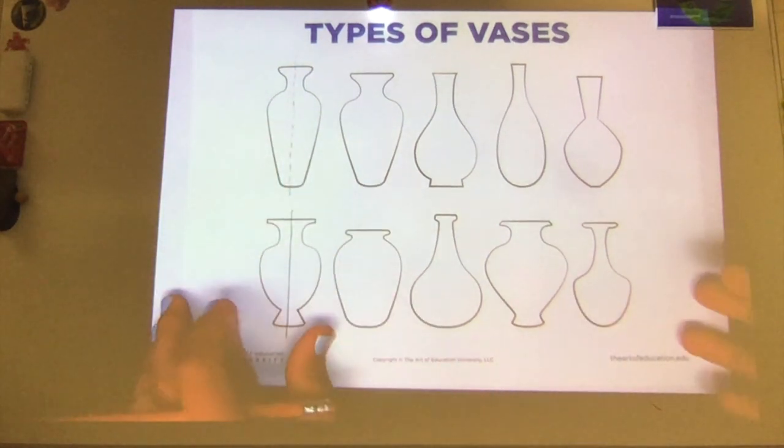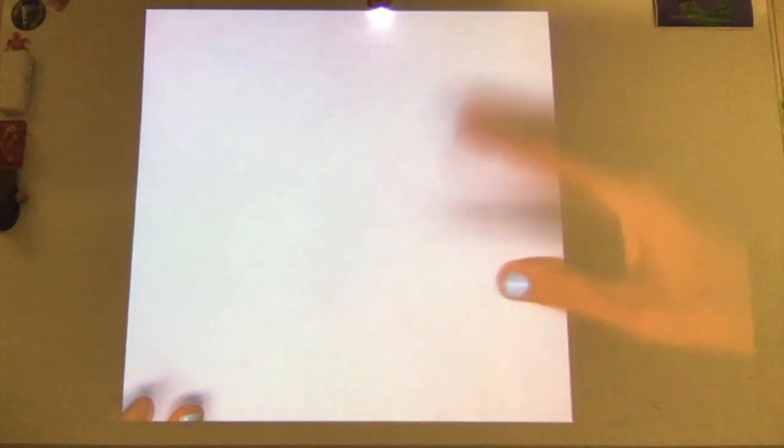So what you're going to do with your sheet of paper, the first thing that you want to do is fold it in half. Now, you can fold it in half like a hamburger if you want your pot to be short and wide, or you could fold it in a hot dog style if you want your vase to be nice and tall. I'm going to do a hot dog style.